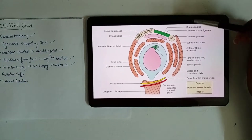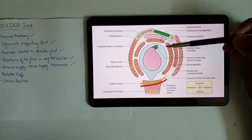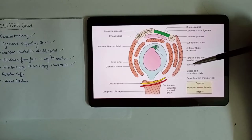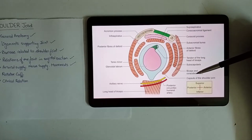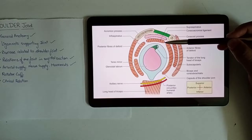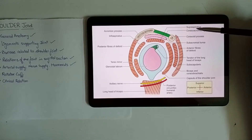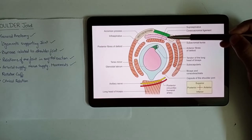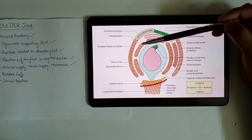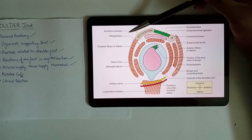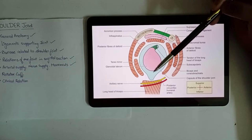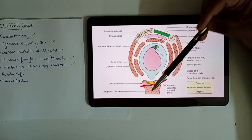In the sagittal section of the shoulder joint, anteriorly the muscles were subscapularis, biceps and coracobrachialis, and the anterior fiber of deltoid muscle. Superiorly we had supraspinatus, subacromial bursa, acromial process, and coracoid process. Posteriorly the relations were infraspinatus, posterior fiber of deltoid, and teres minor, and inferiorly we had the long head of triceps.